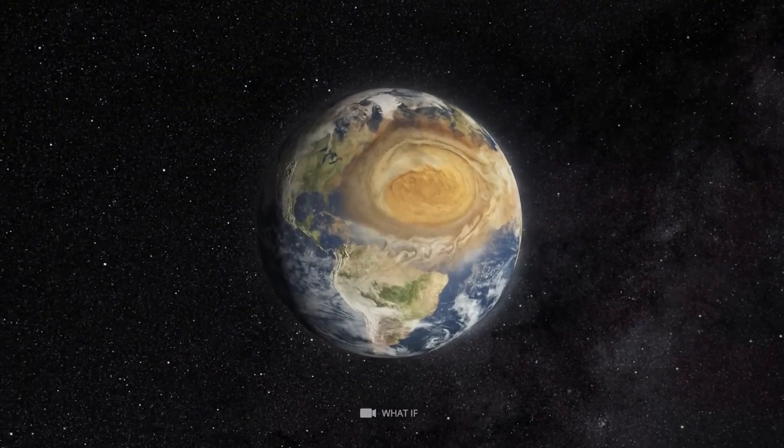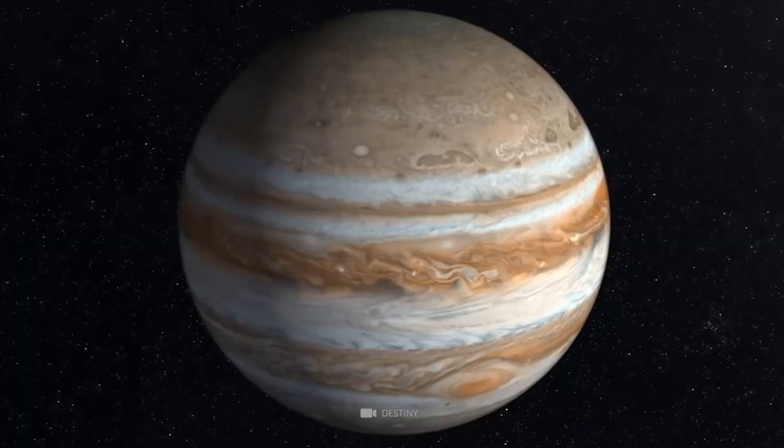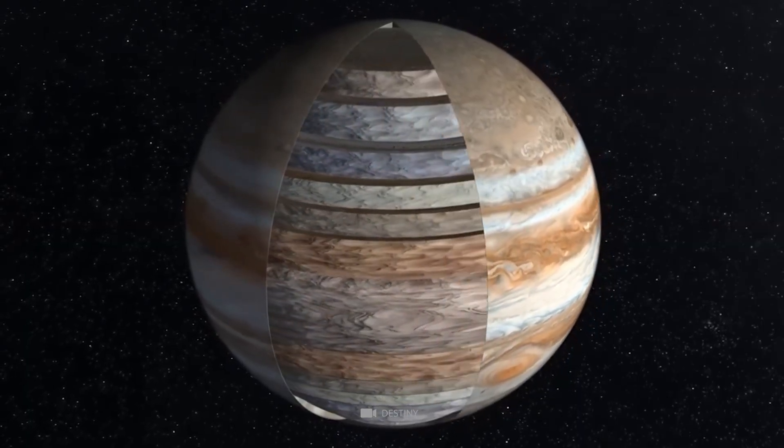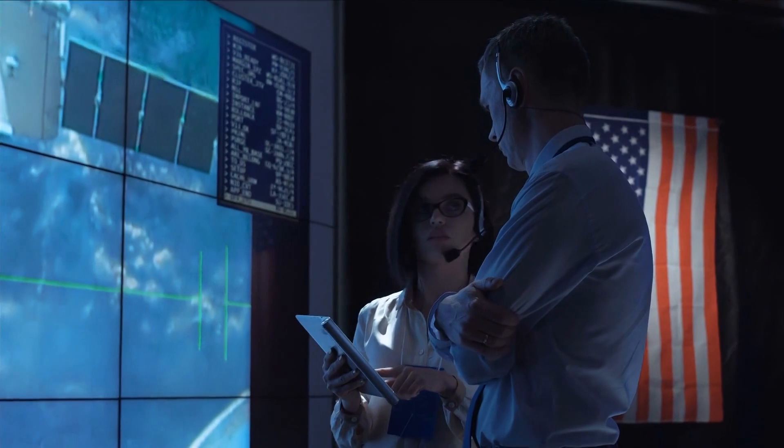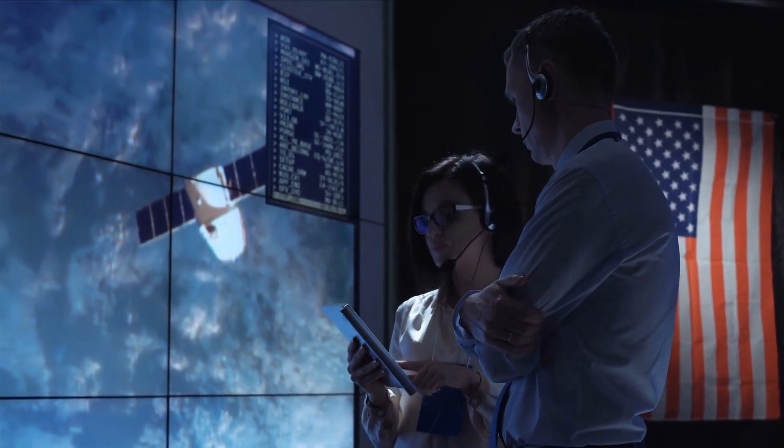On Earth, a storm would eventually die after hitting land, but on Jupiter, it rages on because there isn't a solid surface. Scientists say the storm was probably there for years before it was first observed. No one knows how it gets its distinct red color.